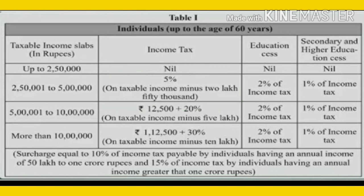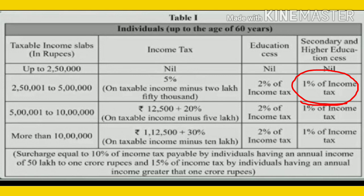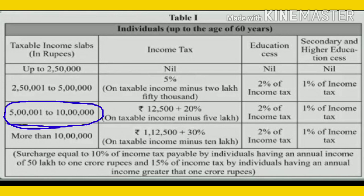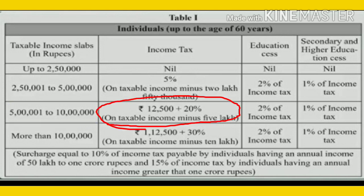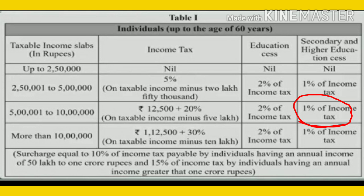Along with that you have to pay education cess at two percent on income tax, and secondary and higher education cess at one percent of income tax. Moving to the next condition: if yearly income is five lakh one to ten lakhs, income tax is rupees twelve thousand five hundred plus twenty percent on taxable income minus five lakhs, along with two percent education cess and one percent secondary and higher education cess.